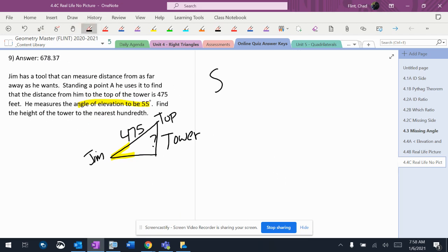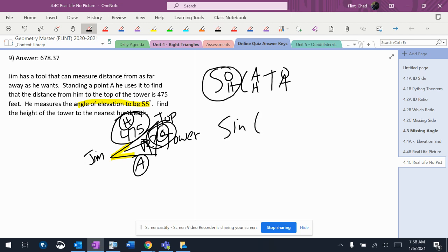This is going to be a SOHCAHTOA problem because we have an angle involved. Hypotenuse is right there, opposite right there, and adjacent over here. I know the hypotenuse, I want to know the opposite, means this is going to be a sine problem.